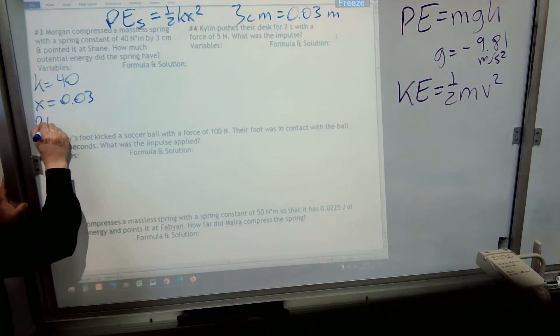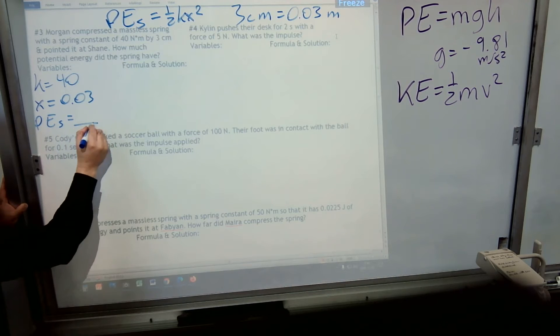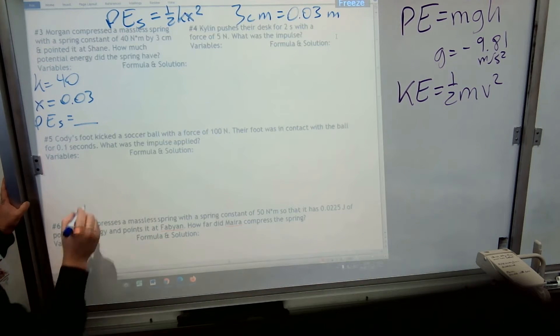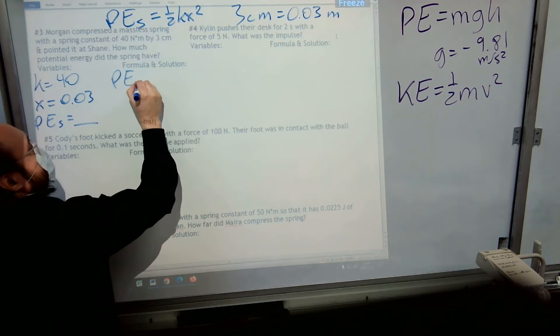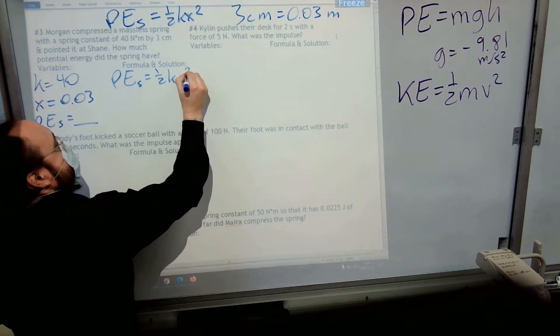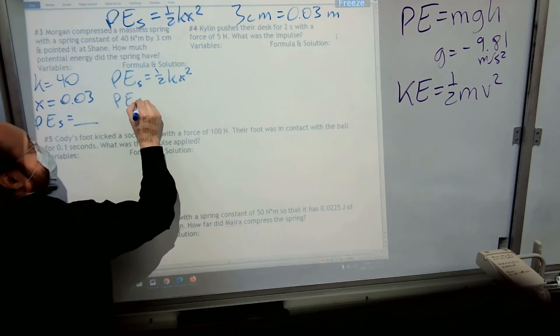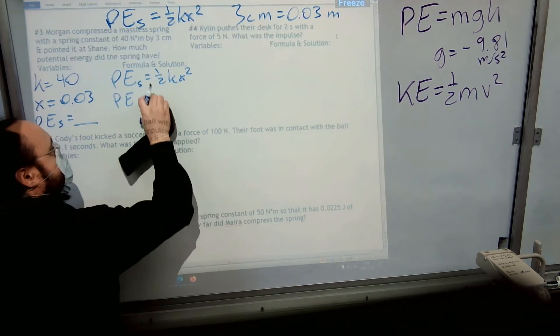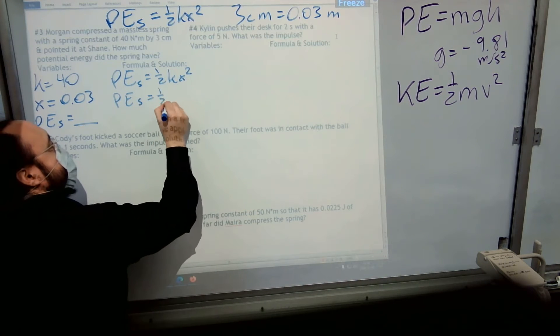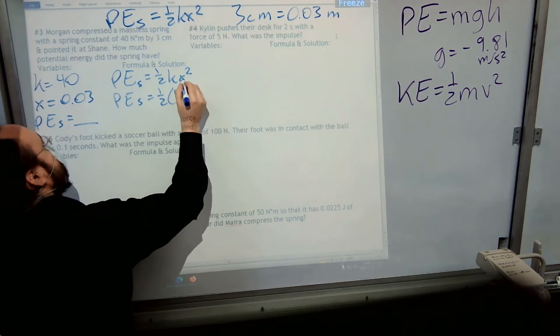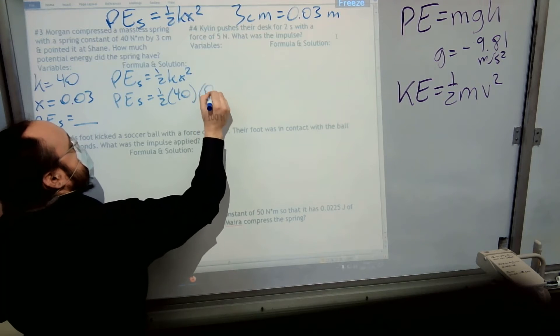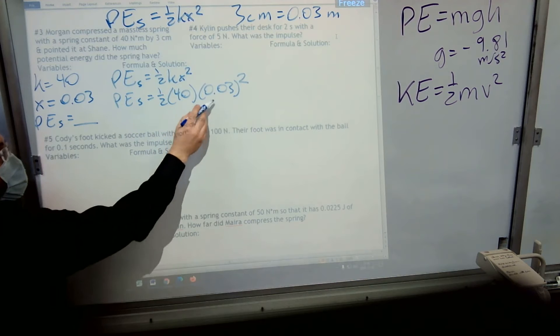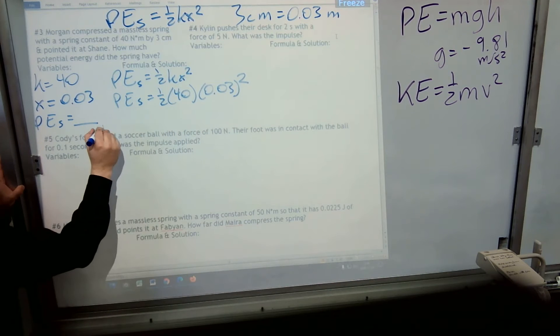And it asks how much potential energy did it have. So we're looking for that spring potential energy or elastic potential energy. So I'm just going to plug it in. Don't forget, when you do the squared part, you have to do the squared part first, because of order of operations. You've got to do exponents, and then multiplication.